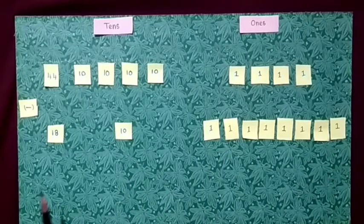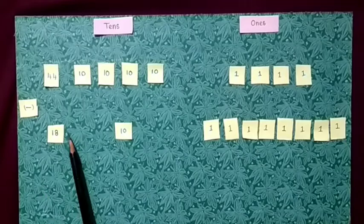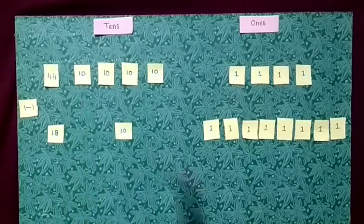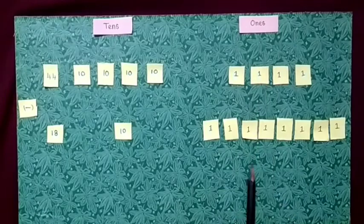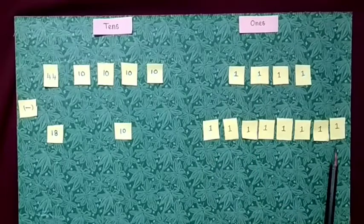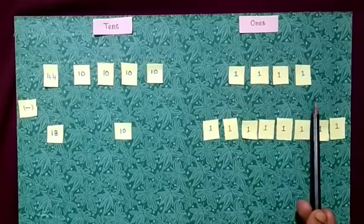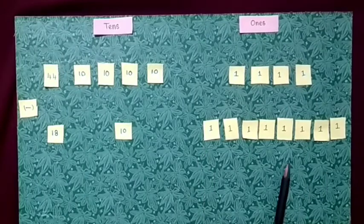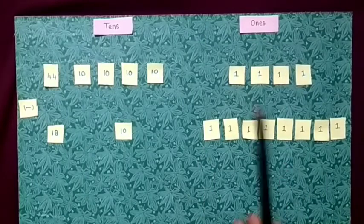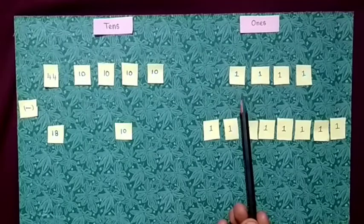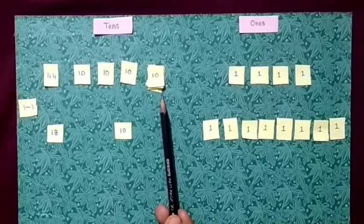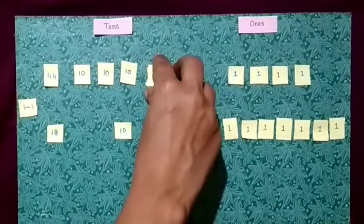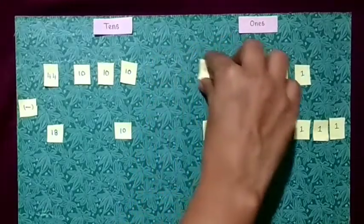Now we are going to subtract 18 from 44. First, we will subtract the ones. Subtract 8 ones from 4 ones. 8 ones cannot be subtracted from 4 ones. For that, we have to borrow 1 ten from the tens place and change it into 10 units.